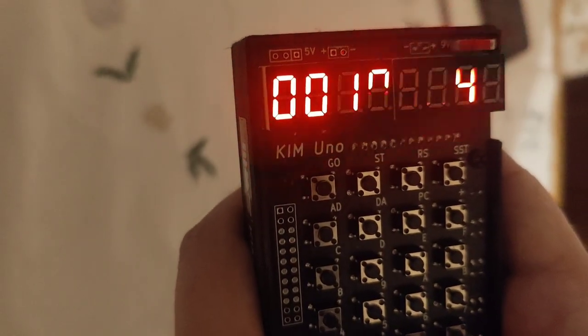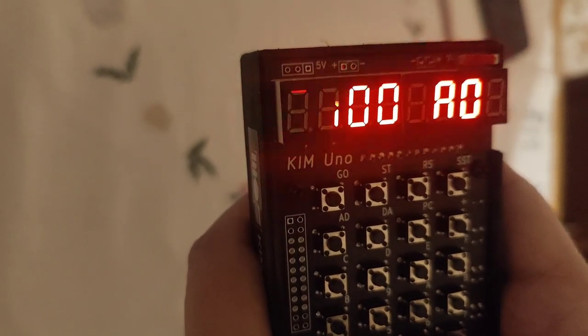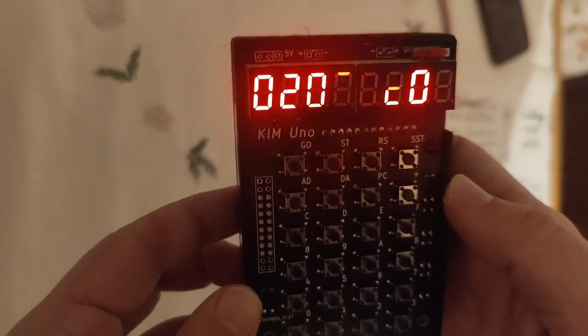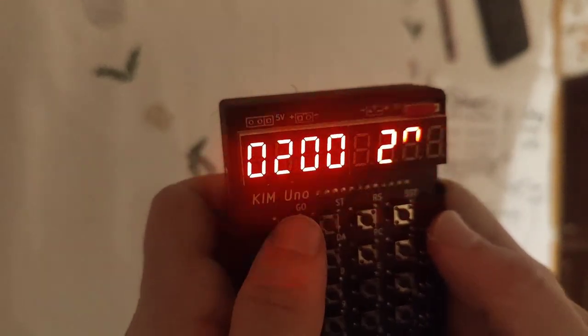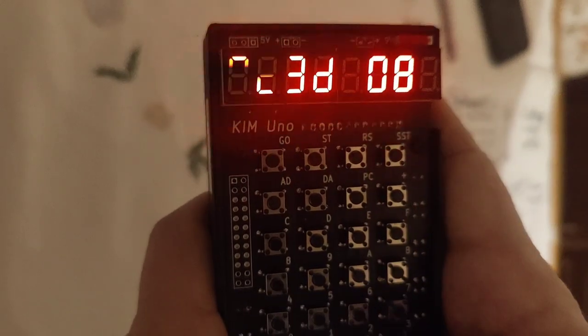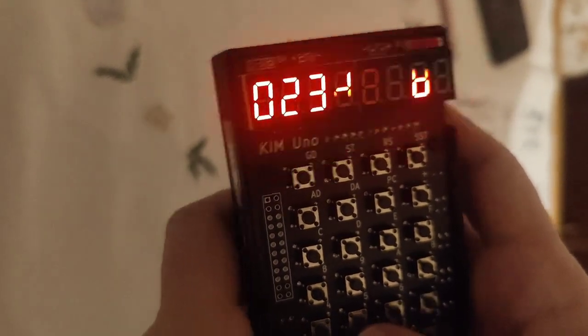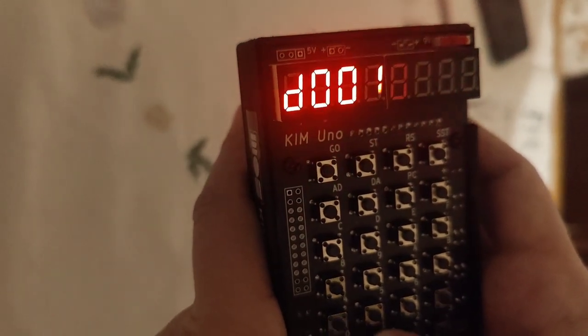Then, we go to 0200. And at address 200 hex is the beginning of our program. We press go. Blinks for a moment. It has now compared the knowledge array. And then, again, we go to 00. If you like, we can go to 0010.